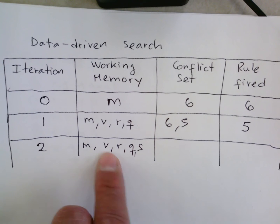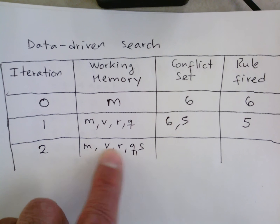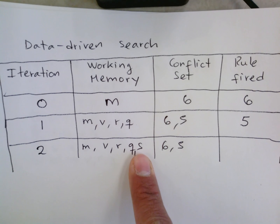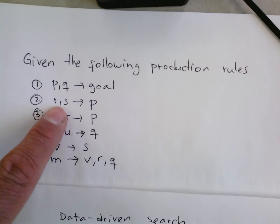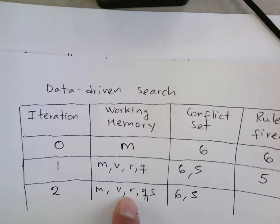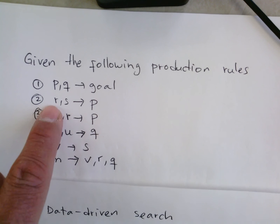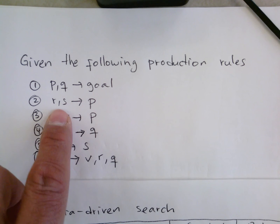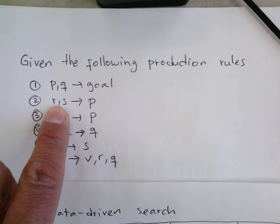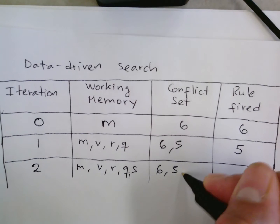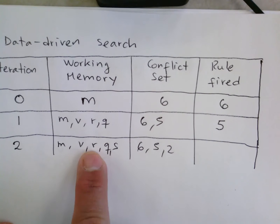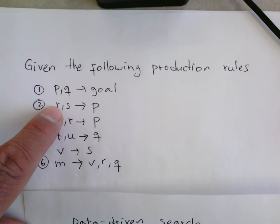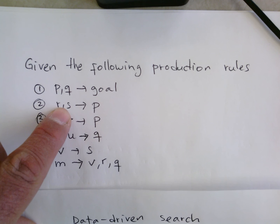We look for matches for these facts. The first four facts we had before still give us rules six and five. Now we check what changes when we add S. We find a rule that has S, and it also needs R — and we have R — so R and S together produce a match. This rule is added to the conflict set. That is the only new rule the S enables, so it is the only new entry.